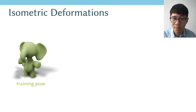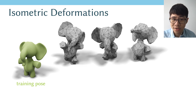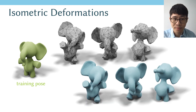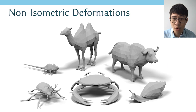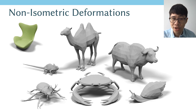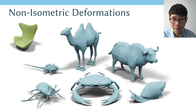Our next experiment is on isometric deformations. We train our network on a canonical pose and test on poses that do not exist in training, and our method can successfully subdivide them. The following experiment is more challenging: we evaluate on non-isometric deformations, training on a green chair and testing on all the gray meshes. Our method is able to generalize to subdivide all of these meshes.